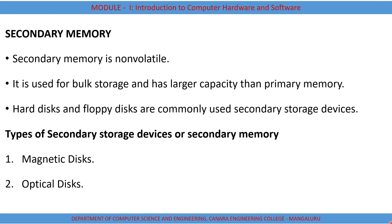The commonly used secondary storage devices are hard disk and floppy disk. There are basically two categories of secondary storage devices based on the technology being used: one is magnetic disk and the other is optical disk. We will discuss each of these in detail in the coming slides.